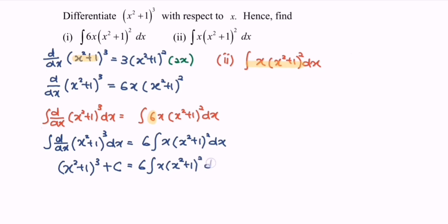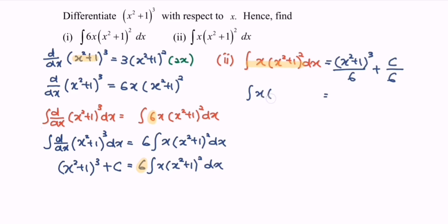We need to divide both sides by 6. Rewriting, we obtain (x² + 1)³ over 6 plus C over 6. Since C over 6 is still a constant, we can rewrite the final answer: the integral of x(x² + 1)² with respect to x equals (x² + 1)³ over 6 plus C. Thanks for watching.